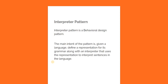The main intent of this pattern is: given a language, define a representation of its grammar along with an interpreter that uses the representation to interpret sentences in the language. Essentially, once you define a language you also define a representation of its grammar and an interpreter which uses that representation to interpret what sentences in the language mean.